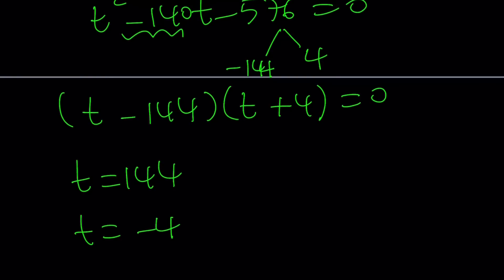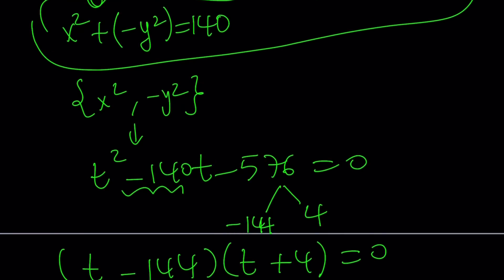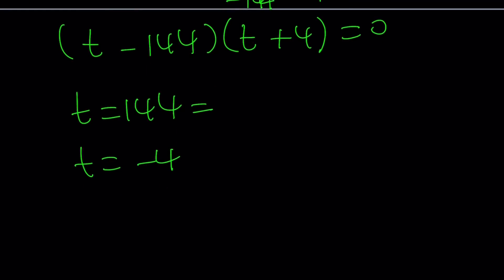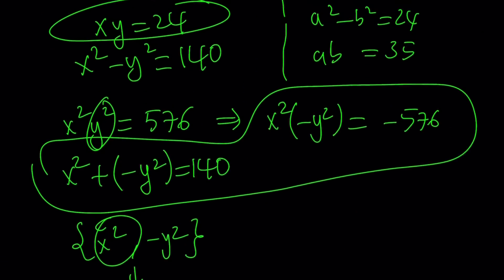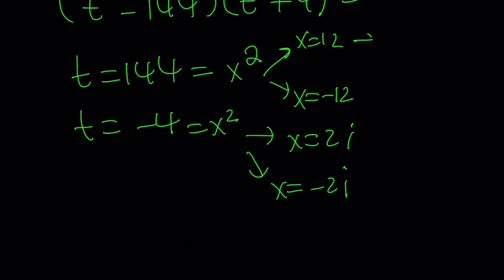Remember what t was? t is either x squared or negative y squared. Let's set this equal to x squared. x squared equals 144 gives us x equals 12 or x equals negative 12. t equals negative 4 and that's equal to x squared gives us x is 2i or x is negative 2i. If x is equal to 12, we know that xy is equal to 24. So if x is 12, then y is 2. If x is negative 12, then y is negative 2. If x is 2i, then y is negative 12i. And y is going to be here 12i.